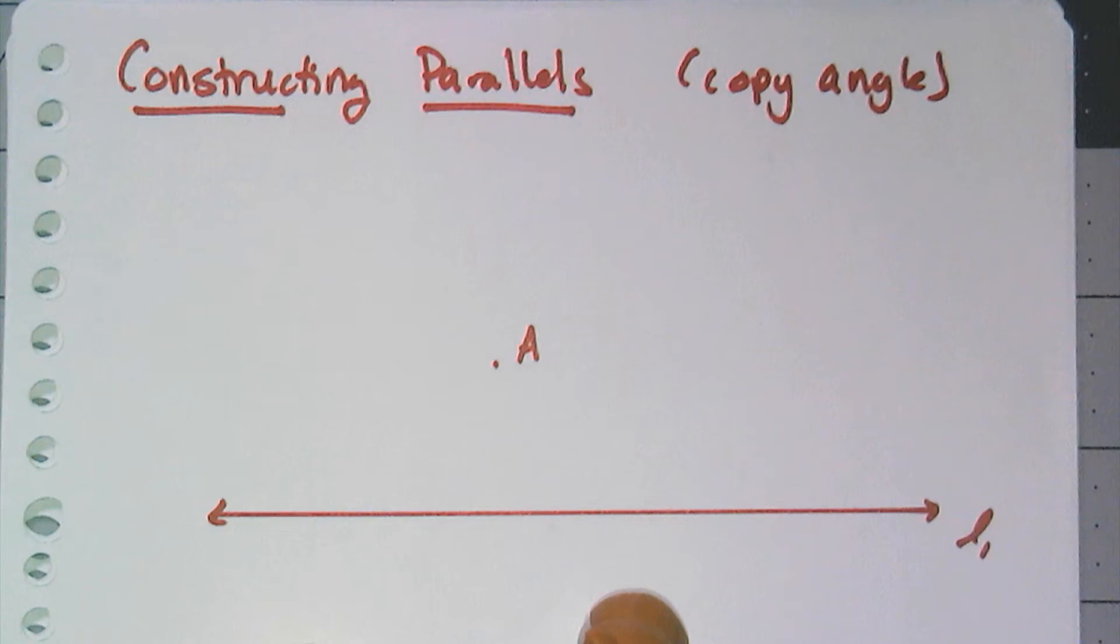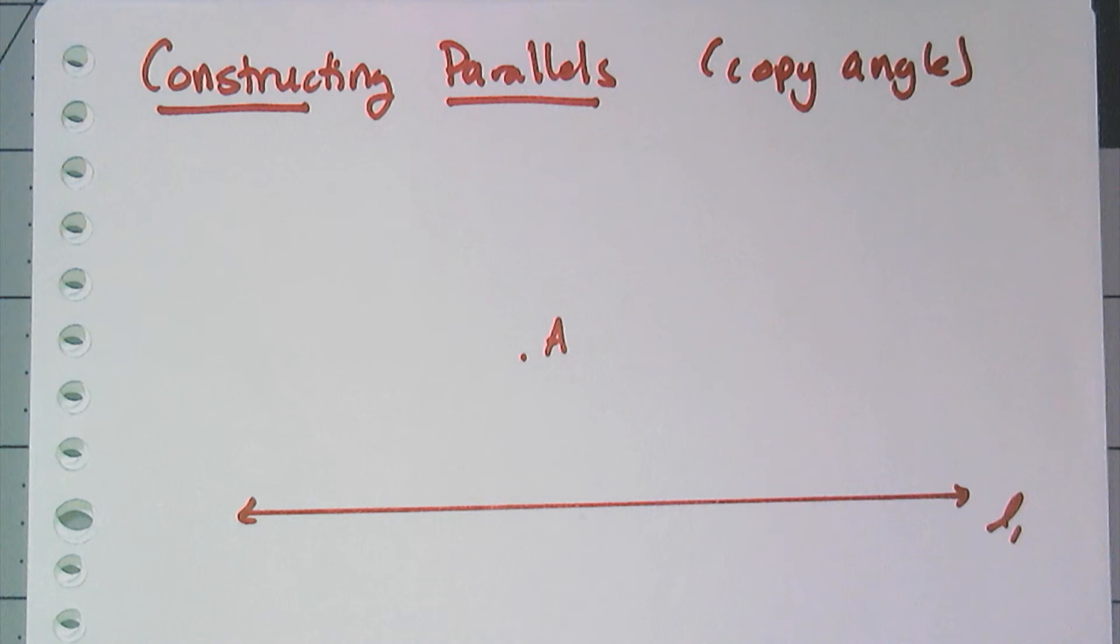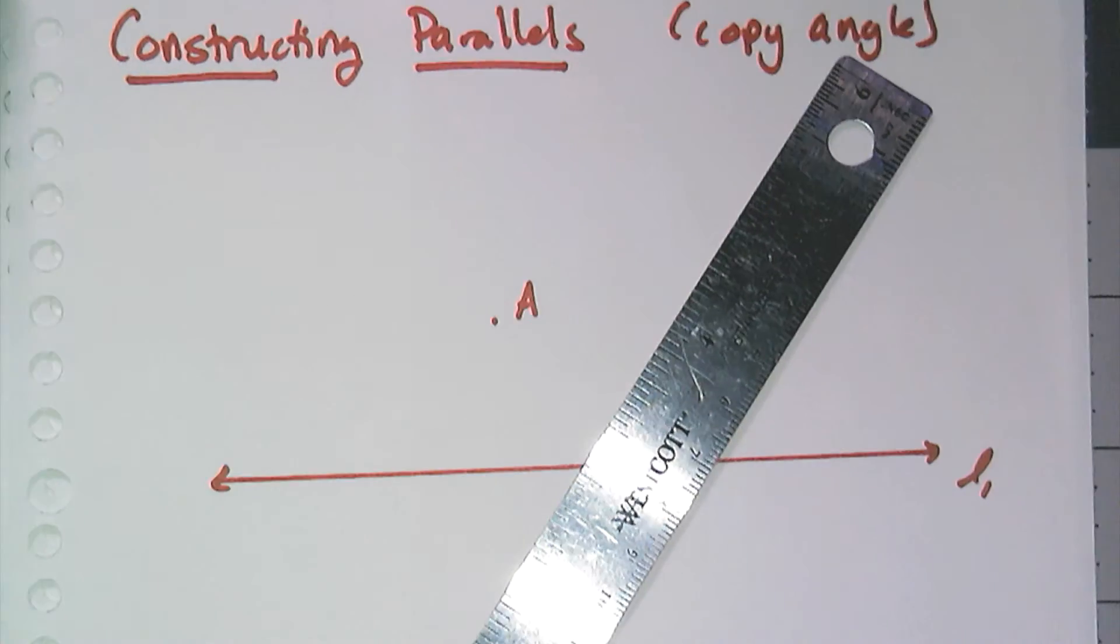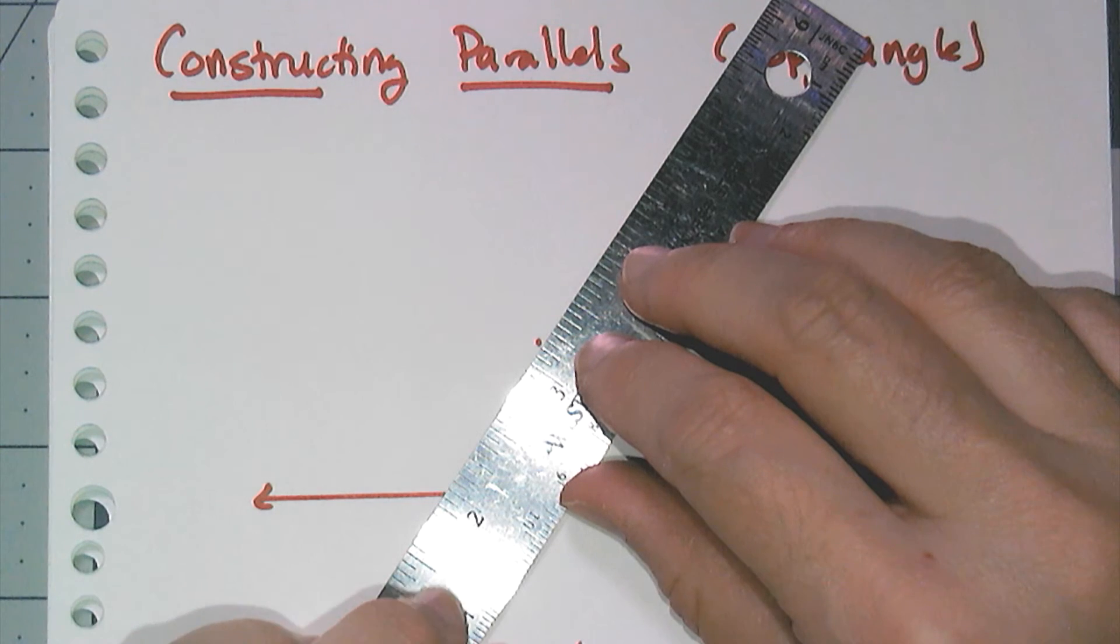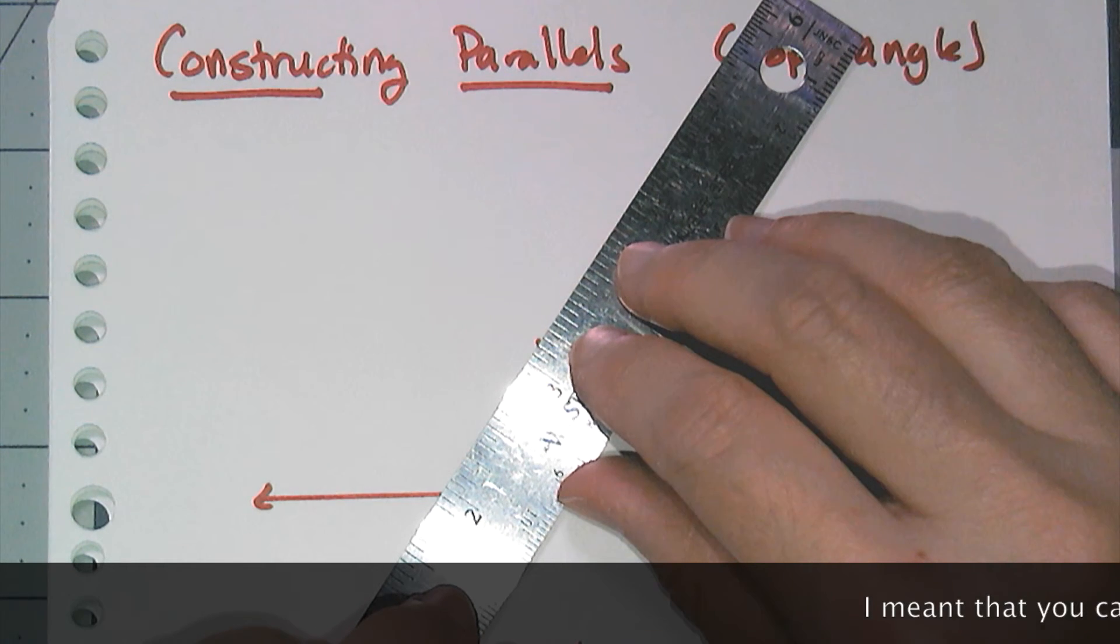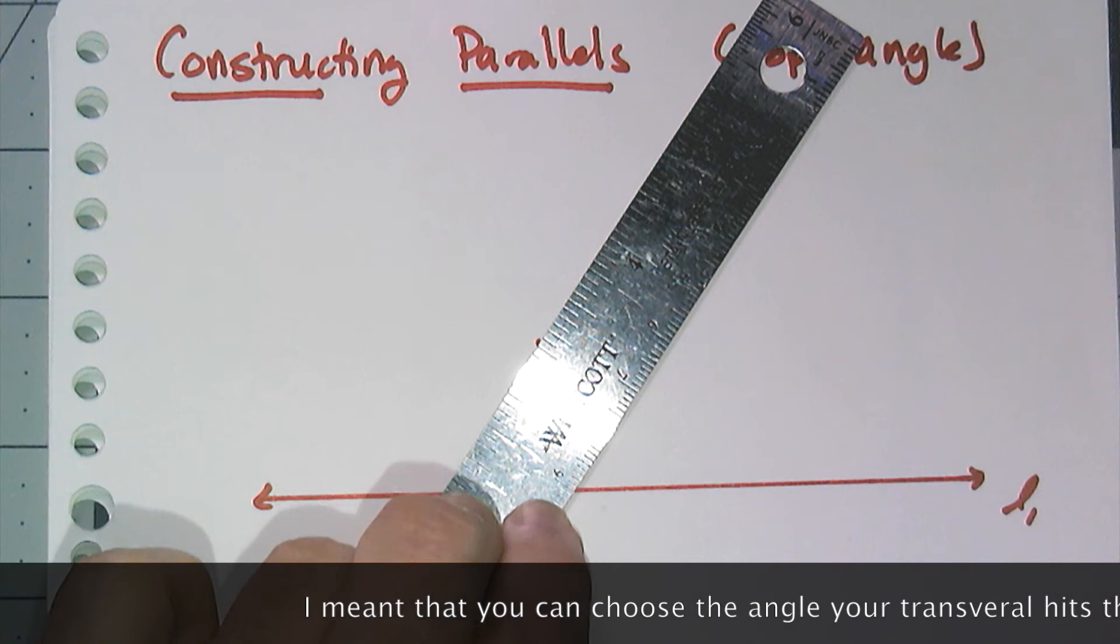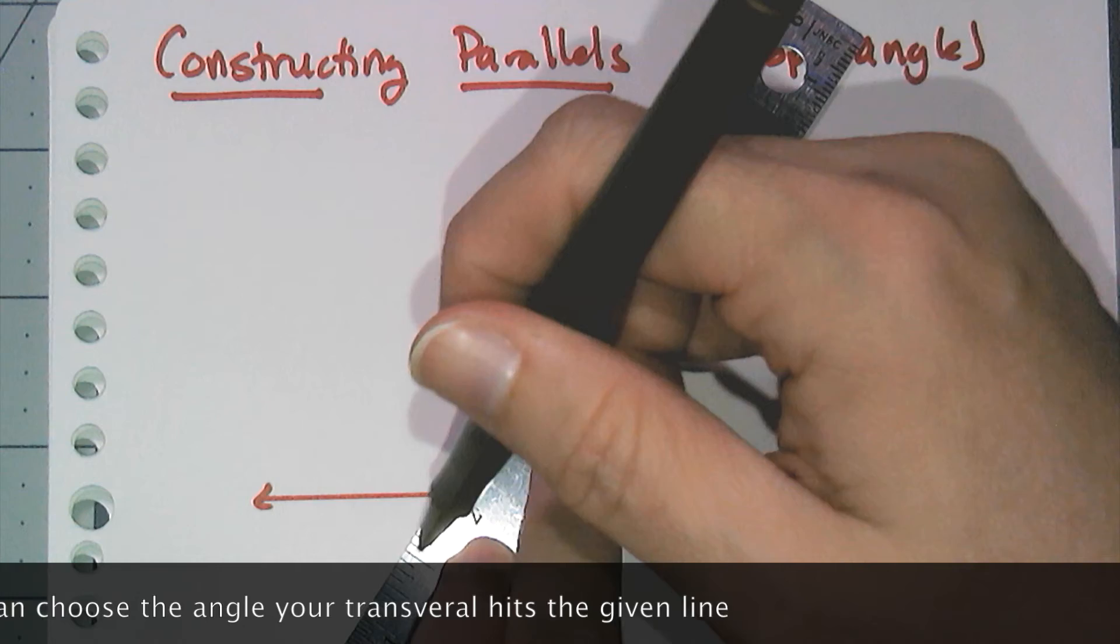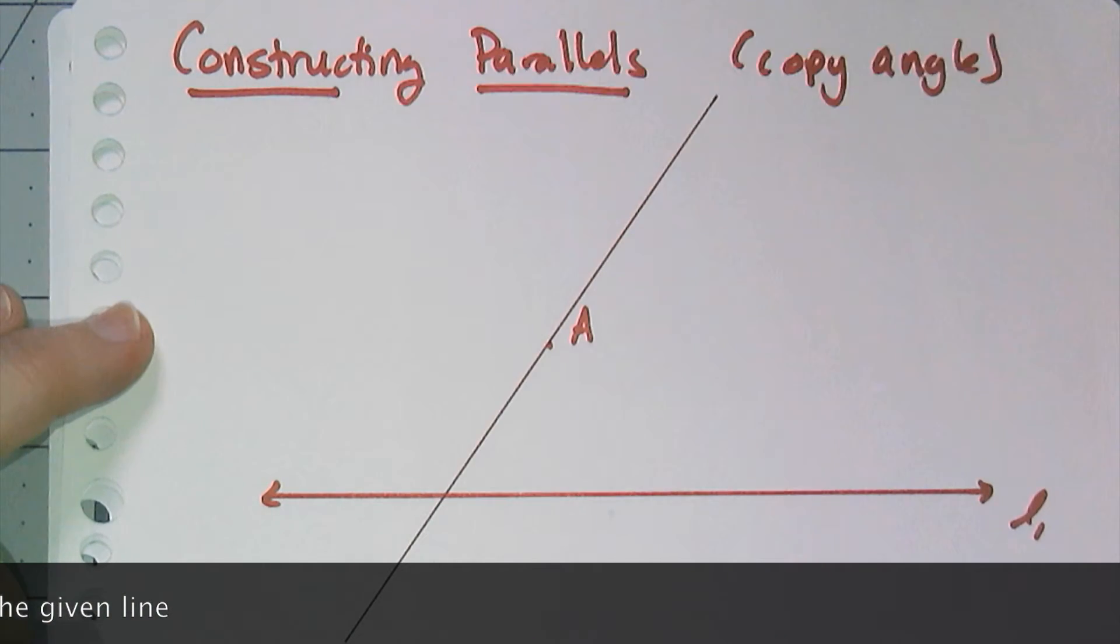So you might notice that something is missing from our picture, mainly a transversal. So in order for this to work, I have to draw in a transversal. And I just can't draw in any random transversal. My transversal specifically has to go through point A. So I'm just going to choose a nice little angle and draw my transversal.